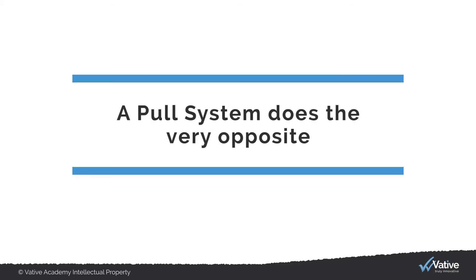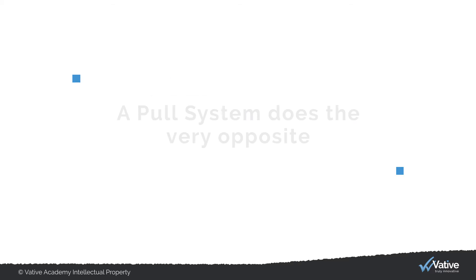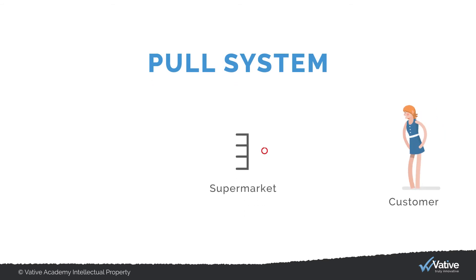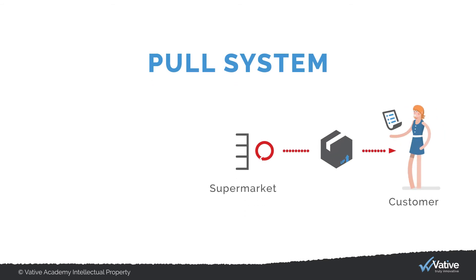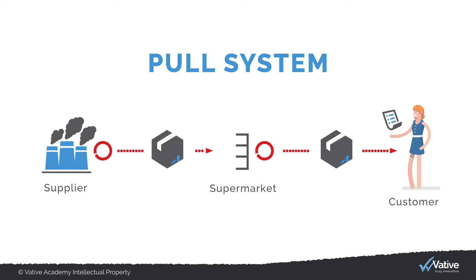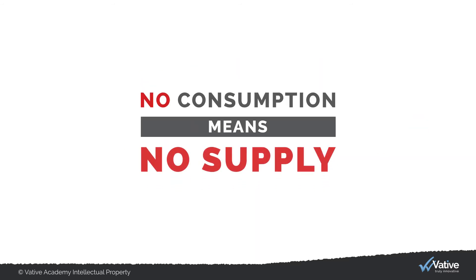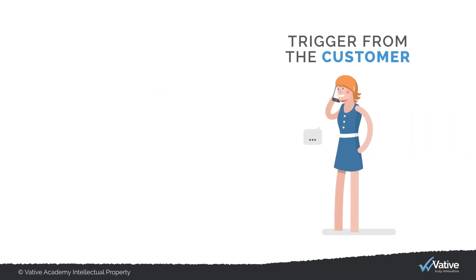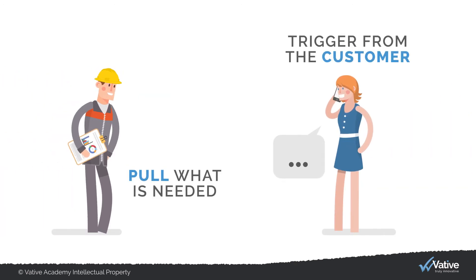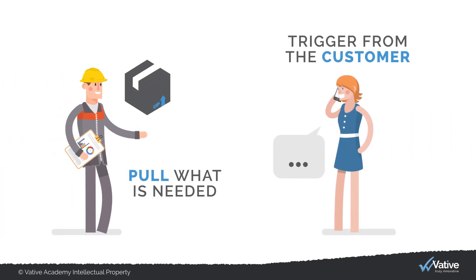A pull system does the very opposite. Here the majority of orders are delivered immediately from controlled inventory supermarkets, which then triggers replenishment of only what has been consumed. No consumption means no supply. Here we trigger from the customer and pull what is needed. This system can be implemented throughout the entire value chain.